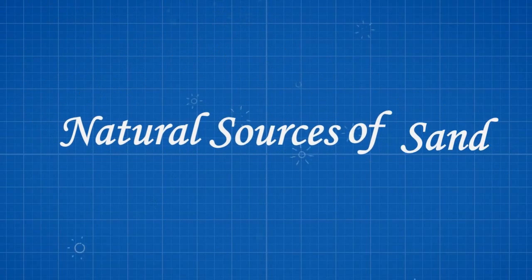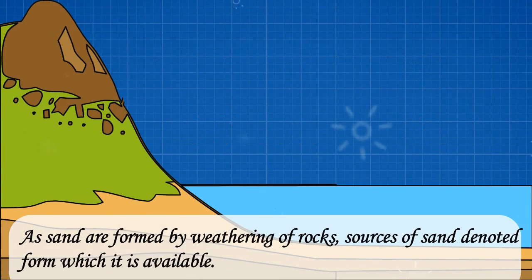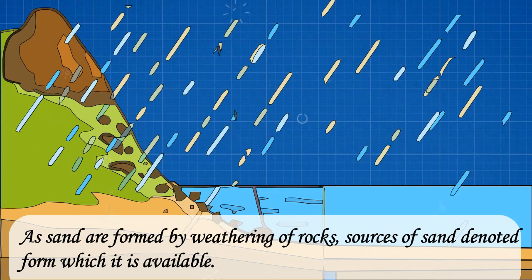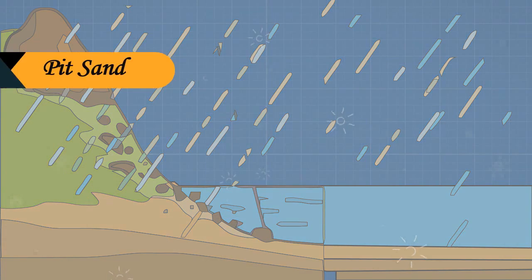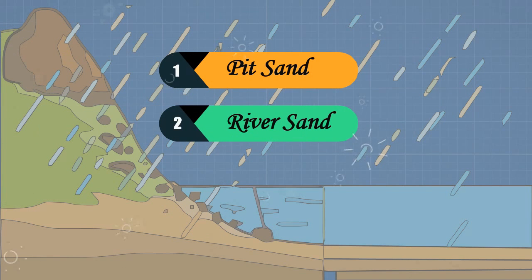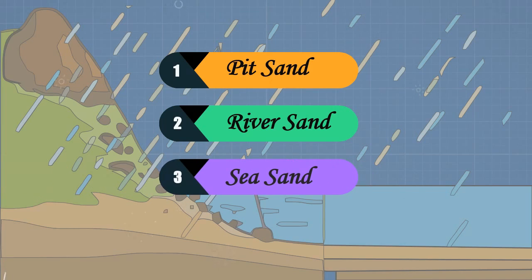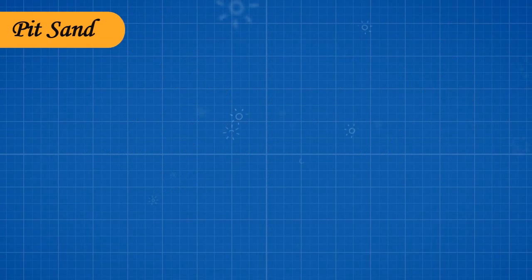Let us now see about natural sources of sand. As sand is formed by weathering of rocks, sources of sand denote where it is available. They are: Pit sand, River sand, and Sea sand.